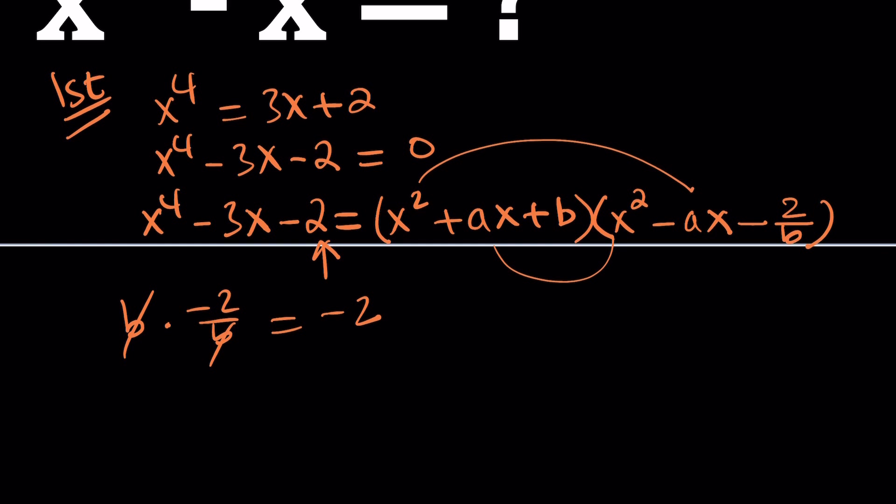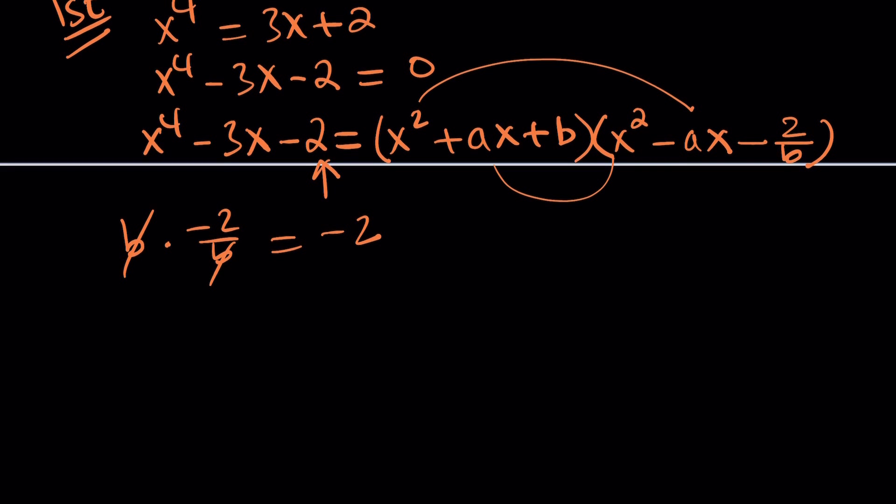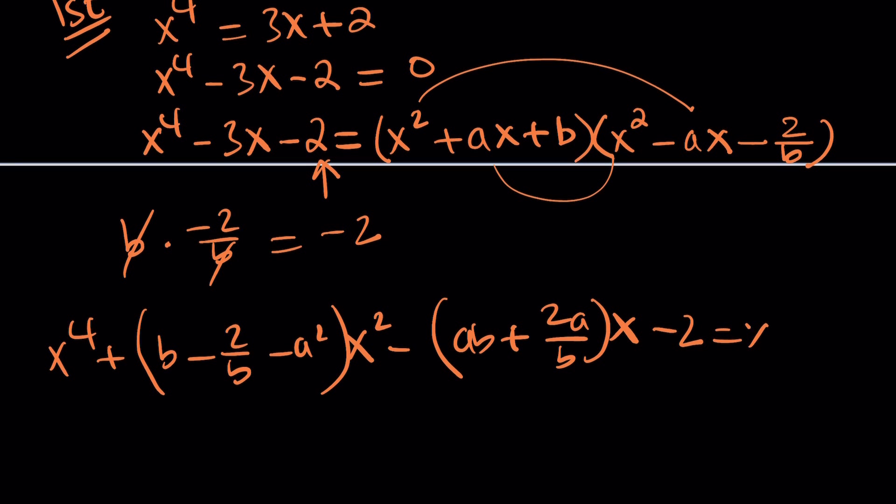Let's go ahead and distribute. When you distribute and simplify this, to keep a long story short, you're going to get something like this: x to the fourth plus b minus 2 over b minus a squared. That's the coefficient of x squared. Minus the coefficient of x is going to be ab plus 2a over b. And then finally, we're going to get minus 2.